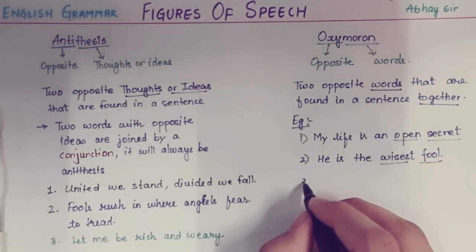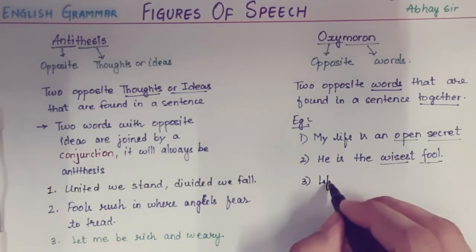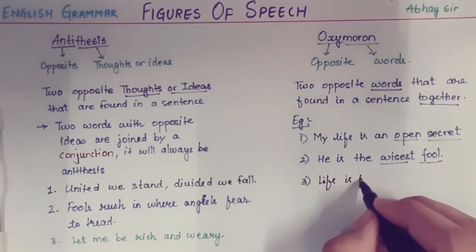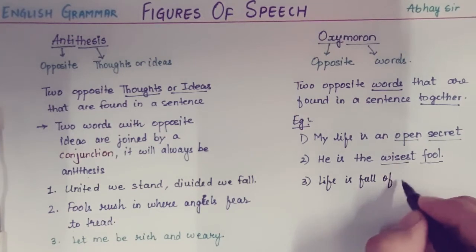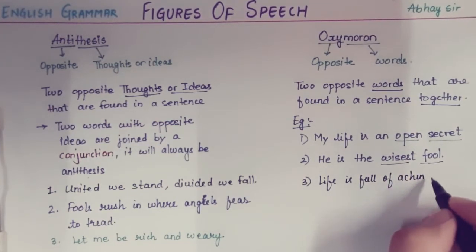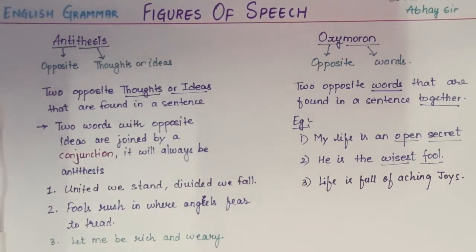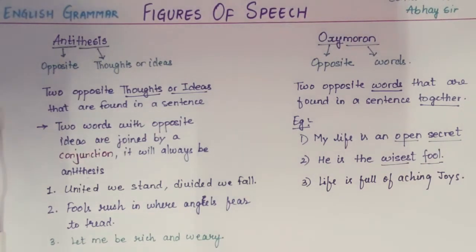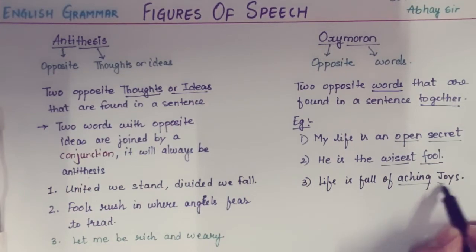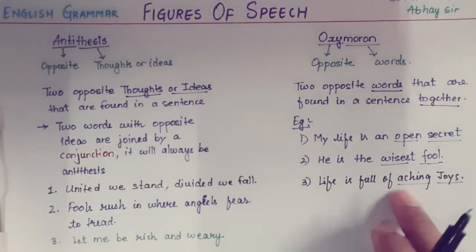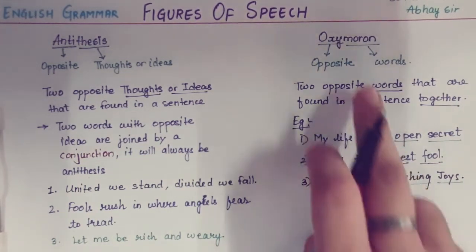The third oxymoron example is: 'Life is full of aching joys.' If life is full of pain, how can you be happy? 'Aching' refers to pain and 'joys' means when you are feeling happy. So these are again two different words placed together. Life is full of aching joys — this is again your oxymoron.